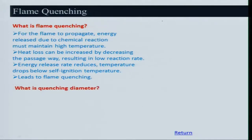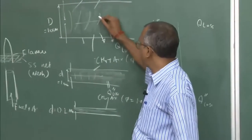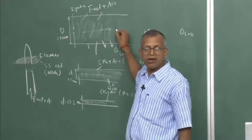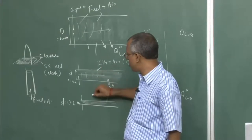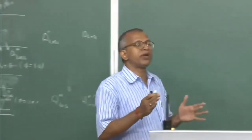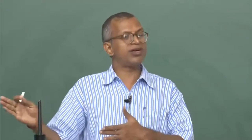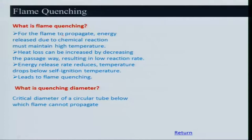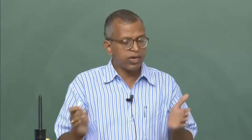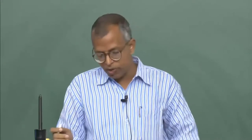The quenching diameter is the critical diameter of a circular tube below which flame cannot propagate. I conduct the experiment: take some diameter D, check whether flame travels, take a smaller diameter, find out at which diameter flame stops propagating. For a channel (two parallel plates) this is called quenching width. The concept applies to both tubes and channel geometries.